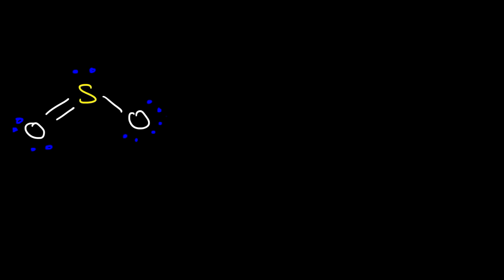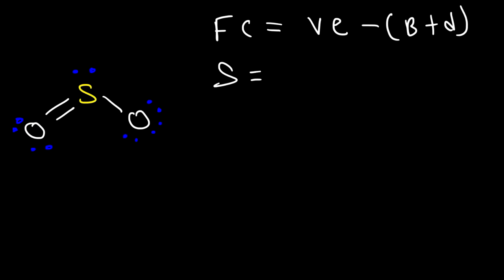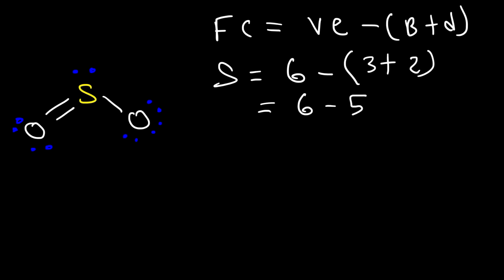Now let's move on to our next example: sulfur dioxide. I want you to calculate the formal charge of every atom in this molecule. I'll start with the sulfur atom. Formal charge equals valence electrons minus bonds and dots. Sulfur has six valence electrons, and in the structure it has three bonds attached to it and two dots. So three plus two is five, and six minus five is positive one. I'm going to put a positive charge on the sulfur atom.